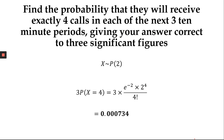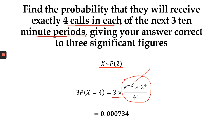Part (c): find the probability of exactly 4 calls in each of the next 3 ten-minute periods. X still follows Poisson with Lambda equal to 2 per 10 minutes. What this means is that for the next 3 ten-minute periods we expect the probability to be the same in each period, because Lambda is fixed at 2 and is not changing. So we compute P(X=4) using E to the power minus 2, times 2 to the power 4, over 4 factorial — and then multiply that by 3 to get the final probability.